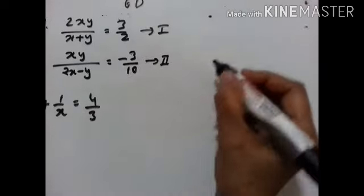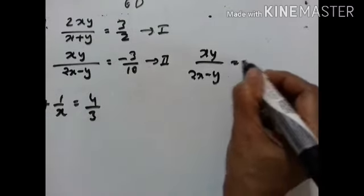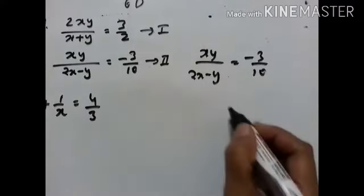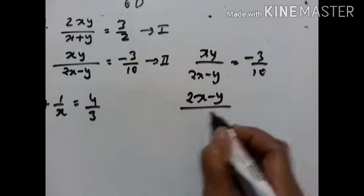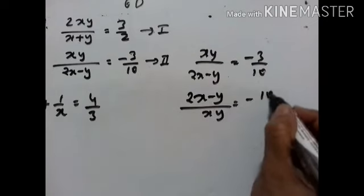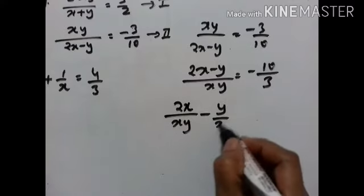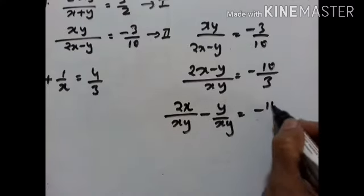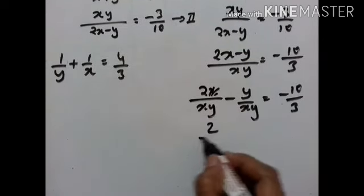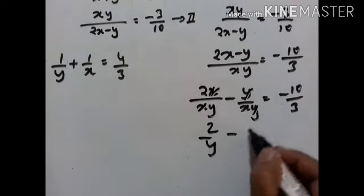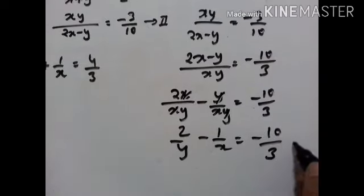Now the second equation: xy upon (2x minus y) equals minus 3 upon 10. Taking the reciprocal: (2x minus y) upon xy equals minus 10 upon 3. Splitting: 2x upon xy minus y upon xy equals minus 10 upon 3. Cancelling: 2 upon y minus 1 upon x equals minus 10 upon 3. This is the second equation.